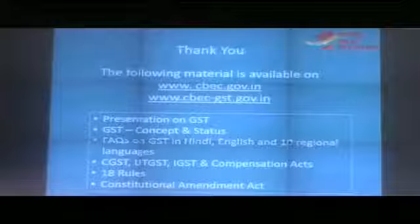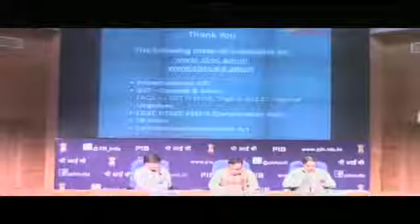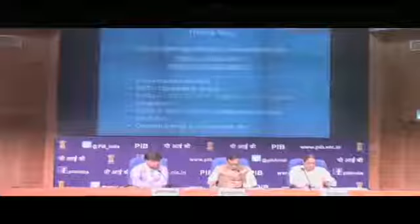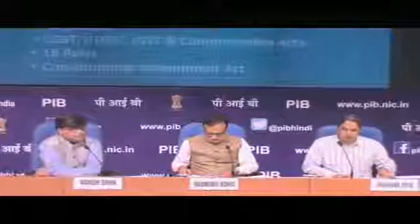Now we will take questions from social media. Several have been received, and many have already been answered in the presentation. First question: I have three units in different states — do I need to furnish the intimation for opting for composition for each unit separately? The answer is no. If you have applied for one unit, it is deemed that you have made the application for all units. Turnover is calculated on the total of all three units, and you cannot take composition for only one — it must be all three.